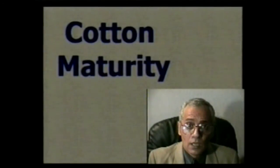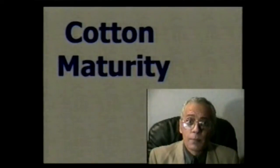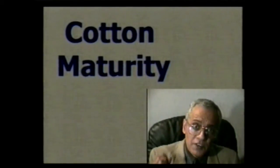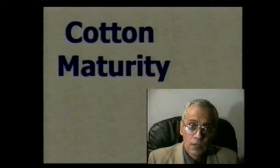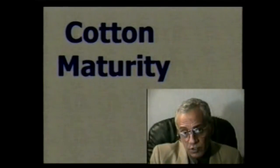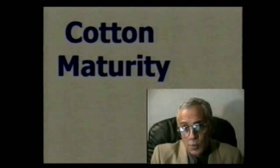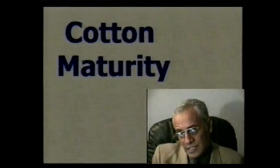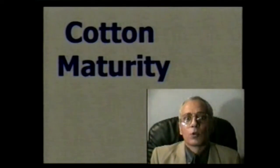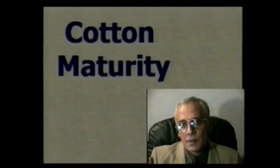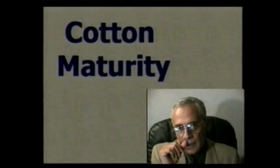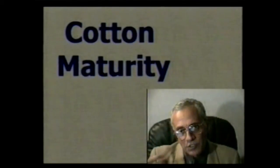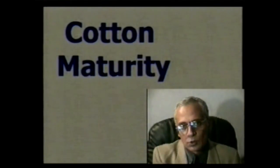The way cotton grows, you form the so-called primary walls first of the cotton cell. The first thing that grows in a cotton fiber is the length — the fiber length grows first. That length has to be completed before the secondary wall starts to form, and when the secondary wall starts to form, the fibers start to thicken.